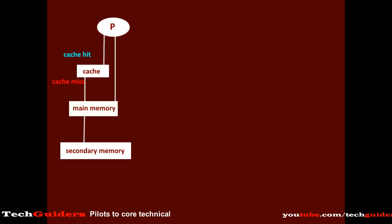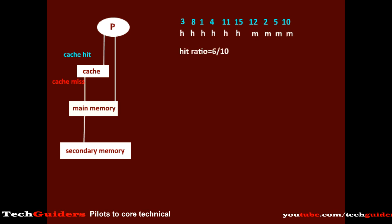Now, what is hit ratio and miss ratio? Suppose we have 10 references to the following memory blocks. Among them, suppose the first 6 were hits and the last 4 were misses. Then the hit ratio is the ratio of the number of hits to the total number of references — here it is 6/10. And miss ratio is the number of misses to the total number of references — here it is 4/10. Always, hit ratio plus miss ratio equals 1.